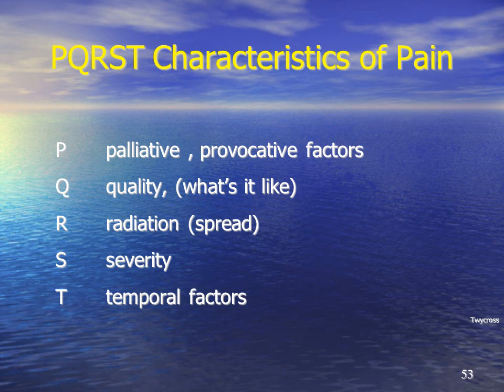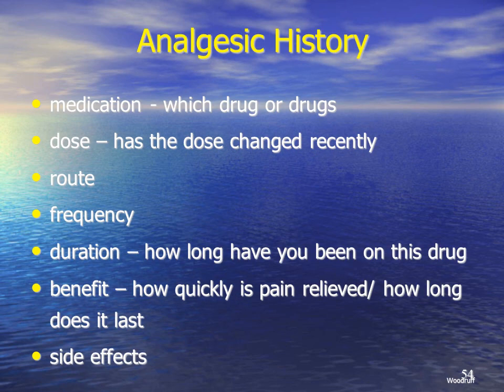There's the PQRST system for looking at characteristics of pain: palliative factors, quality, radiation of pain, severity, and temporal factors — such as is it associated with something else, what brings the pain on, what turns the pain off. It's important to get a good analgesic history before prescribing medications. Get a list of the drug or drugs the patient has been taking, the dose, the route of administration, how often they are taking the drugs, how long they've been on the drugs, and what benefits and side effects they're getting.